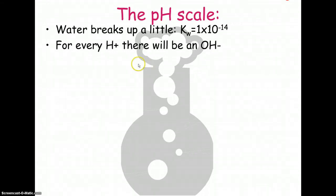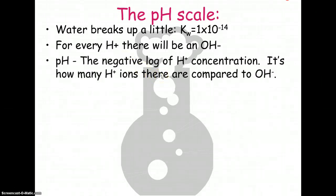And if water breaks up, water is actually HOH, so for every H, there'll be an OH. pH is just a simple way of measuring this in whole numbers instead of using all these negative exponents. So the negative log of the hydrogen concentration is the pH.